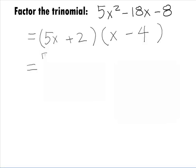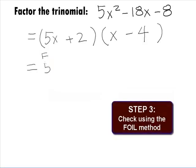We can check this by using the FOIL method. When we multiply the first terms out, we get 5x squared. Multiplying the outside terms, we get minus 20x. Multiplying the inside terms, we get plus 2x. And multiplying the last terms, we get minus 8.